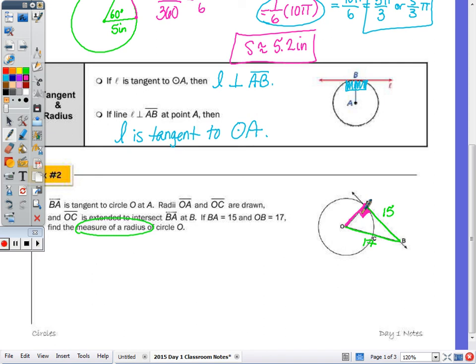This gives us a 90-degree angle and a right triangle. This is the 8-15-17 Pythagorean triple, so the measure of radius OA is 8 units.